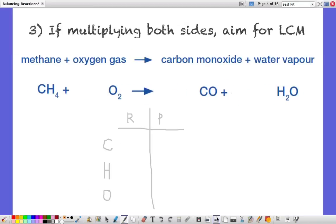The third tip, and this might be a harder one, is our hardest one of the four. If we have to multiply both sides to get a balance, we aim for the lowest common multiple. This is an incomplete combustion of oxygen gas giving rise to carbon monoxide. And again we'll count up the atoms.